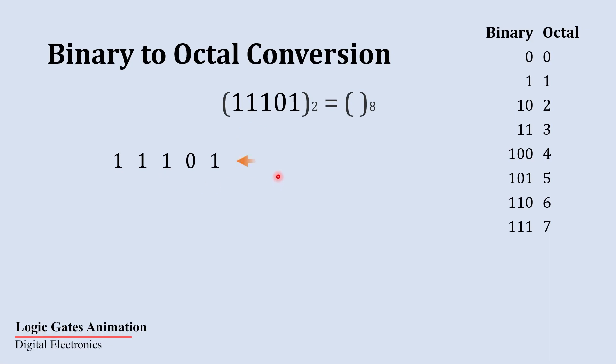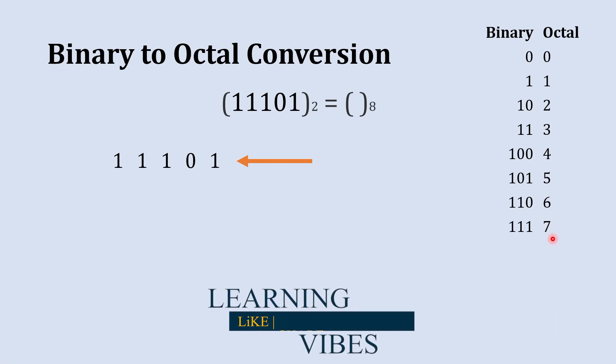In order to start conversion we should start from this side. The single digit largest octal number is 7 and the binary equivalent to 7 is 111. So each octal number can be represented as a three digit binary number.